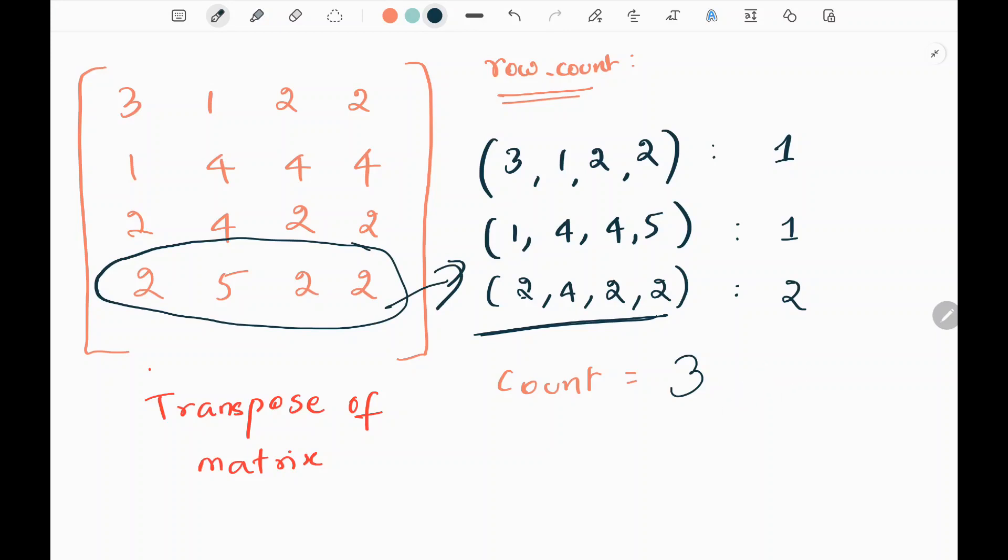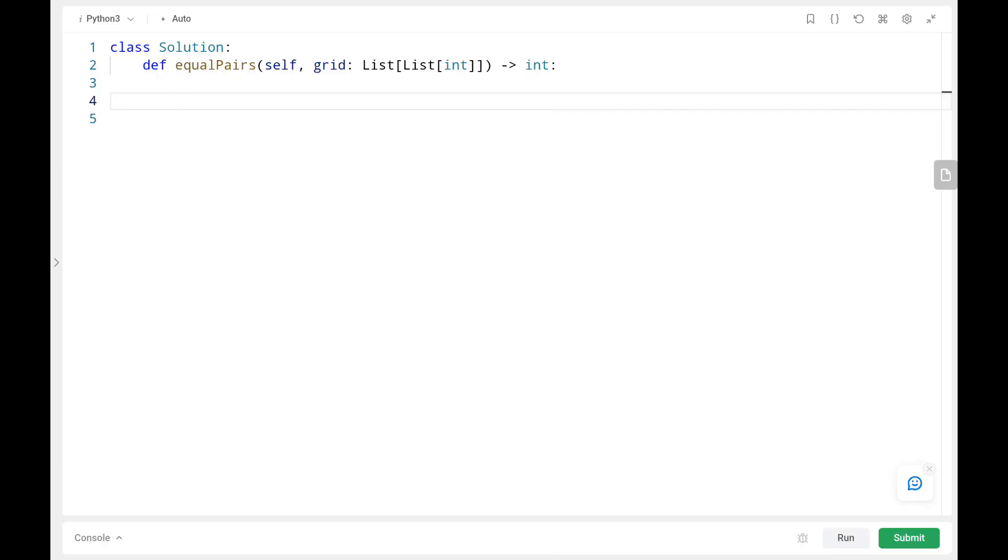Then we are done with all the rows and columns. Then finally we need to return count. So there are three equal row and column pairs that can be formed using the given example. That's all the logic is. Now we will see the code. So before we code, if you guys have subscribed to my channel, please like and subscribe. This will motivate me to upload more videos in future and also check out my previous videos and keep supporting us.